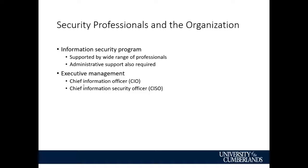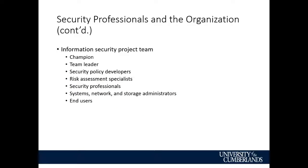How are we going to take care of it? We now have a Chief Information Officer and Chief Information Security Officer — both relatively new to the executive board, added within the last decade or so. The information security team usually has a champion — a top executive who spearheads it and provides resources. You have a team leader, security policy developers, security professionals, systems/network/storage administrators, and end users. End users must be trained on what security is about and how it affects them — a lot of companies just ignore end users, and that's not a good thing.